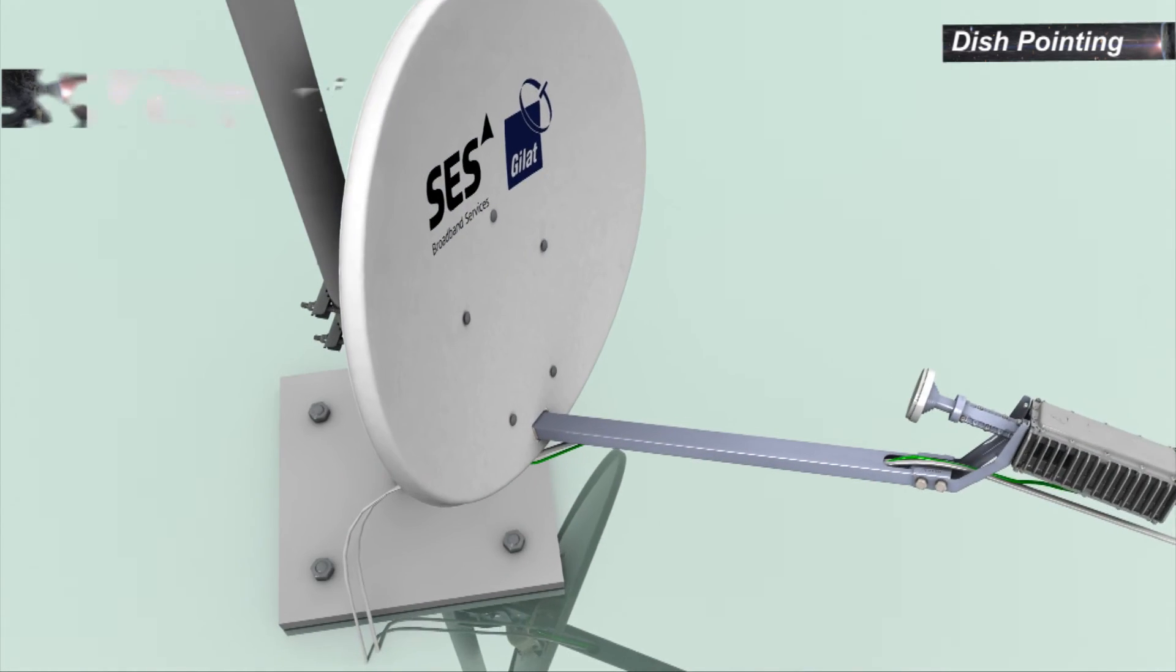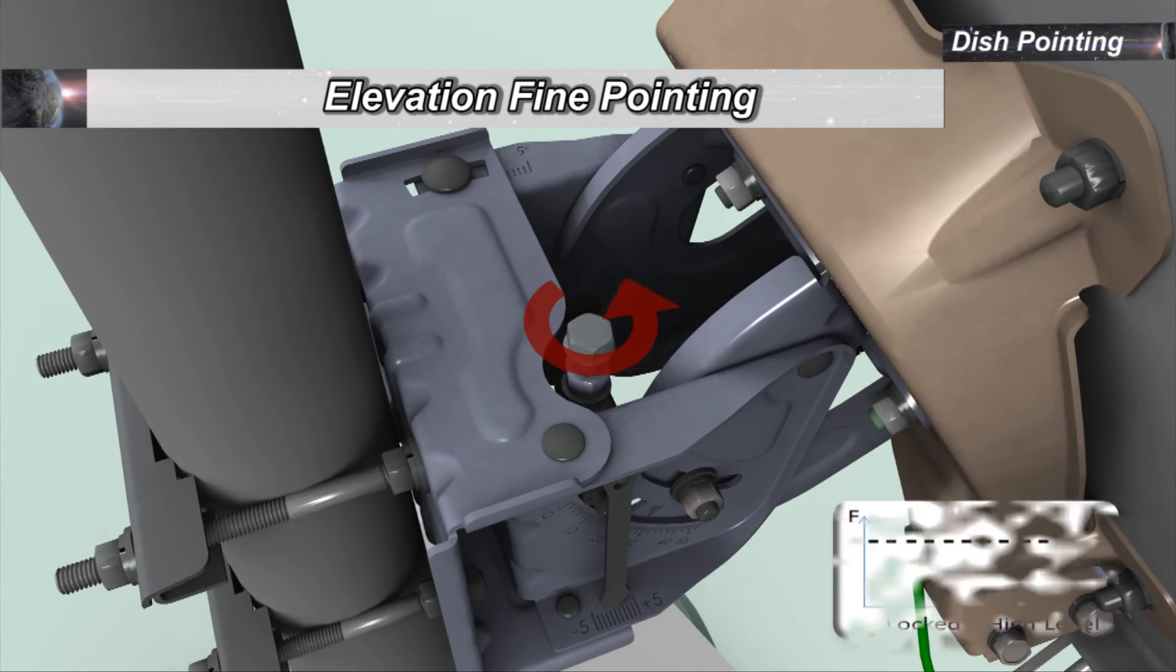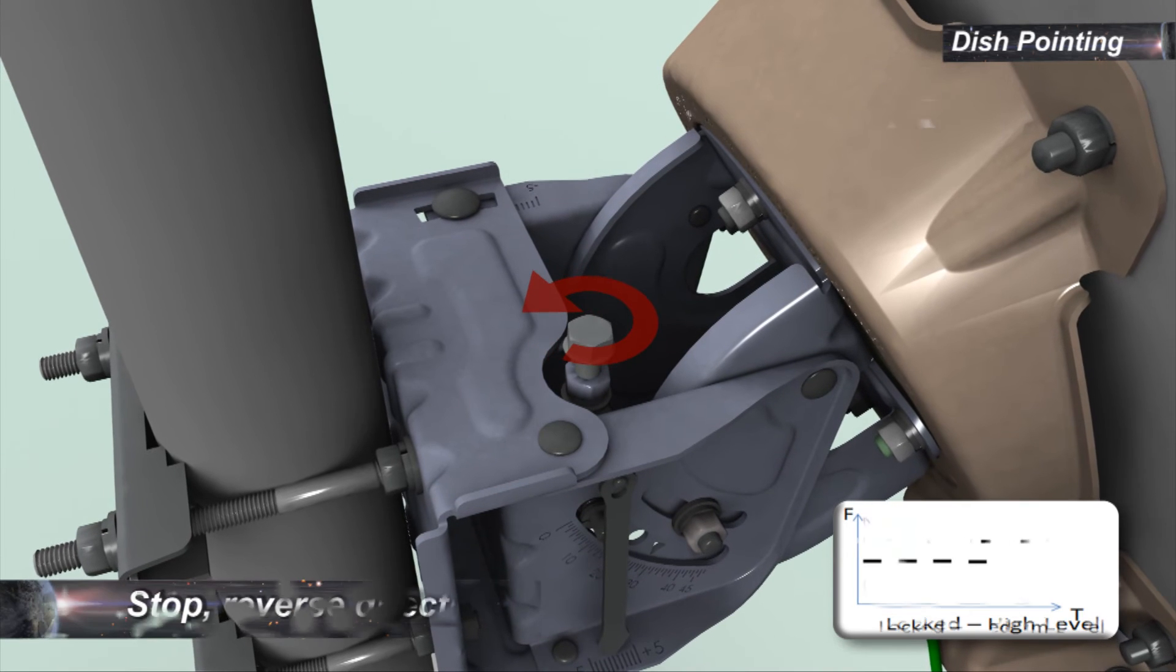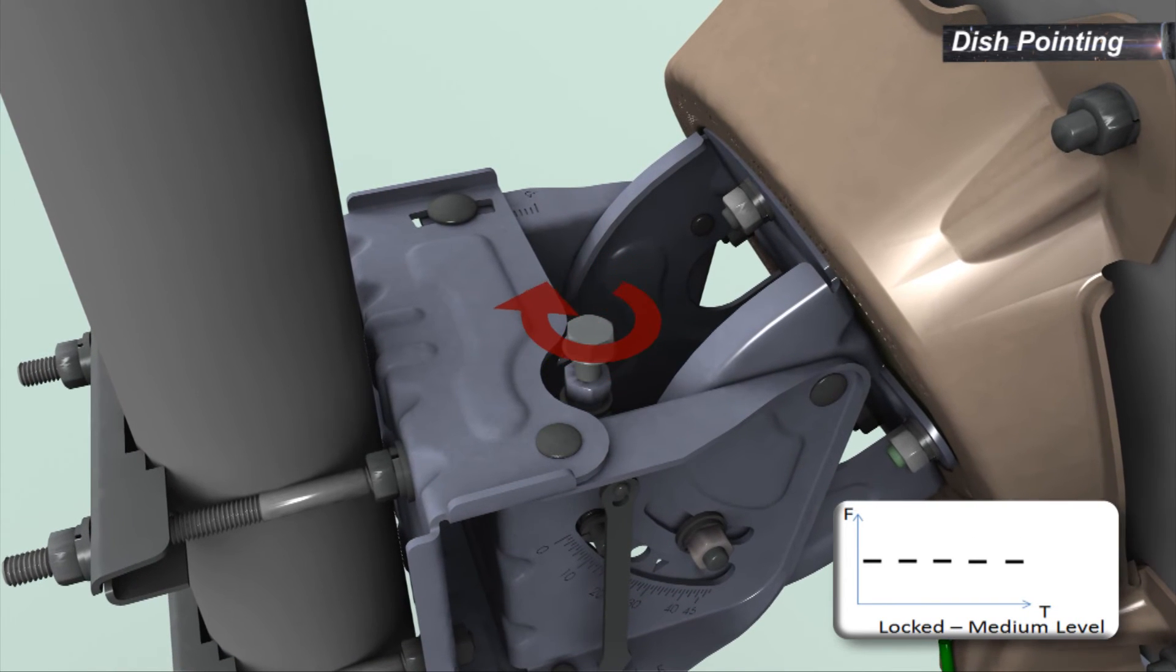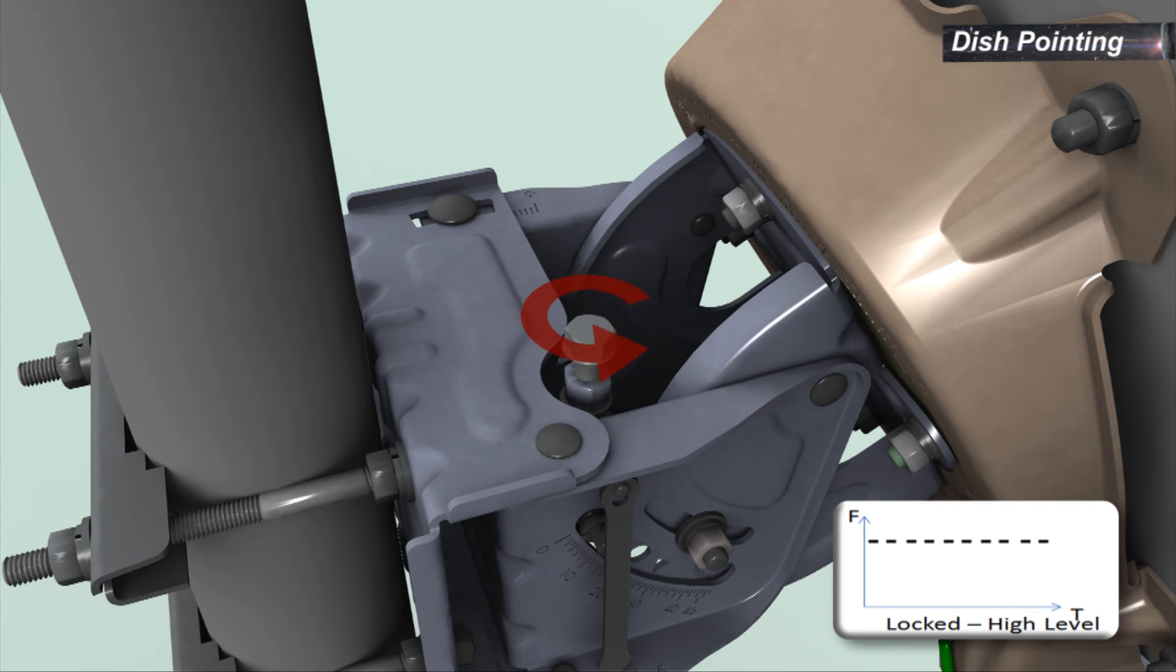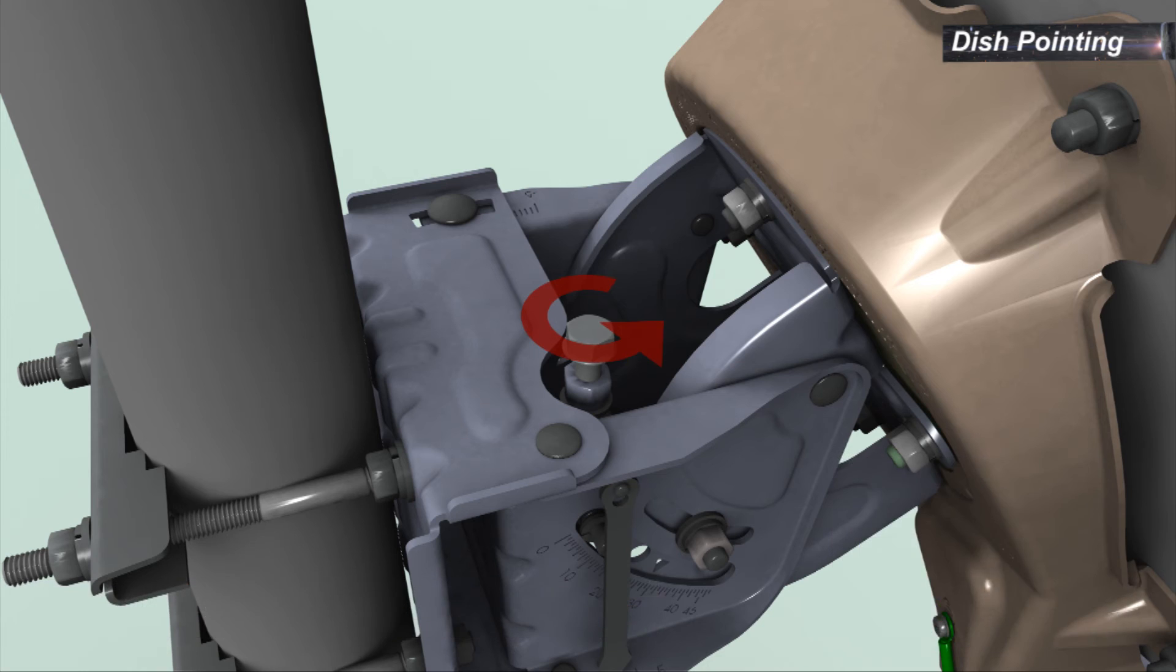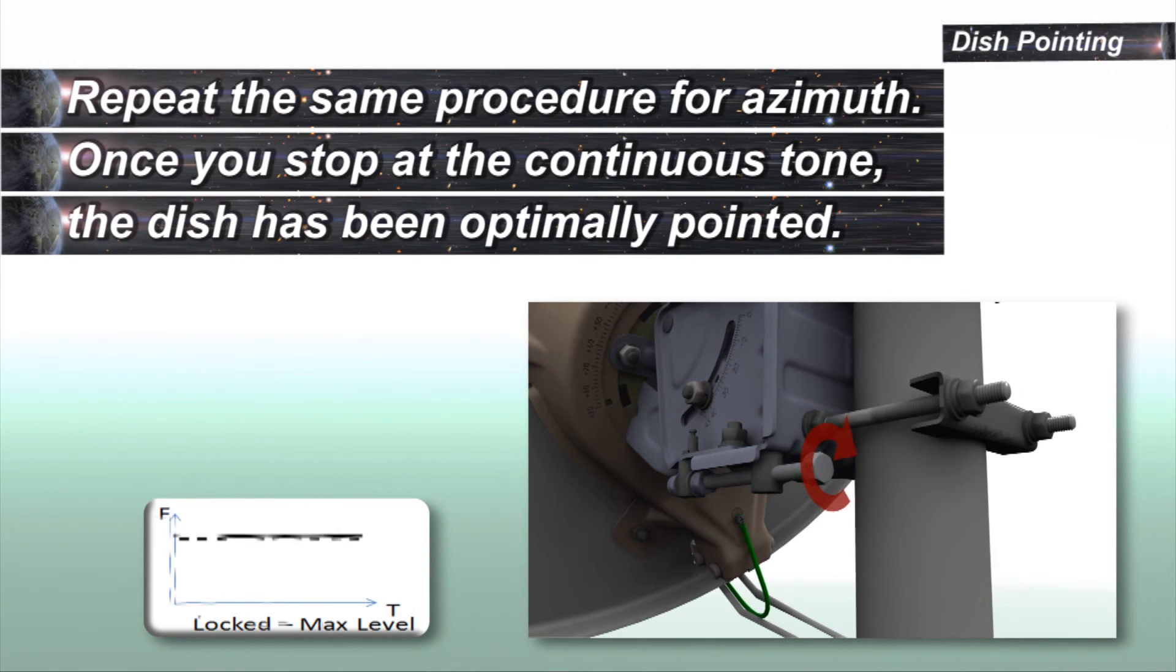To start elevation fine pointing, change the elevation settings until the audio tone indication drops in tone and stagger rate. Stop and reverse direction until continuous tone is achieved. Continue in the same direction until staggering tone starts again. Reverse direction again. And stop as soon as continuous tone is achieved. Repeat the same procedure for azimuth.